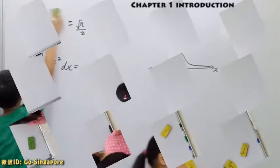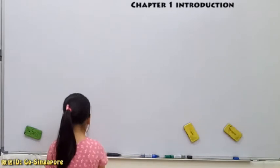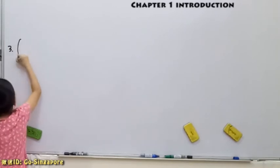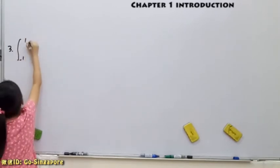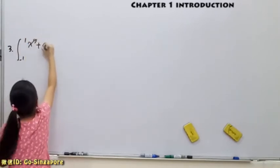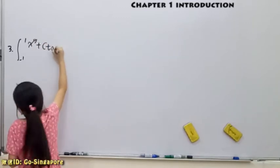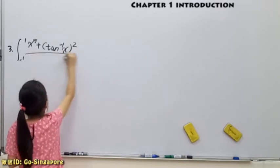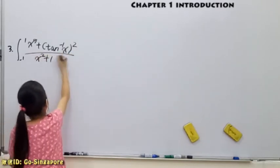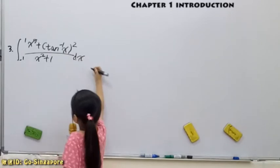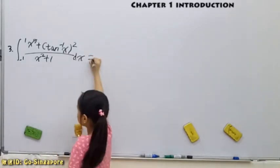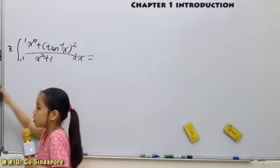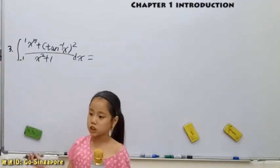Can we move on to the third question? Of course. So next one we'll have is the third question which we can solve it. So this third question is integrate from negative one to one. And this is x to the power of five plus the inverse tangent x holding square, then over x square plus one, and at the back dx.